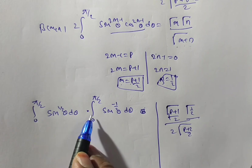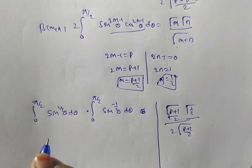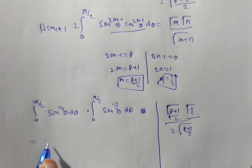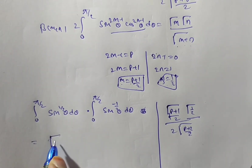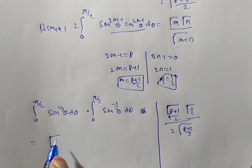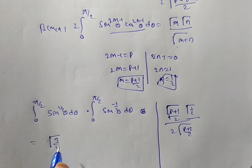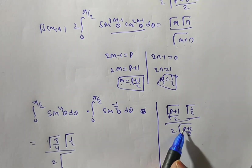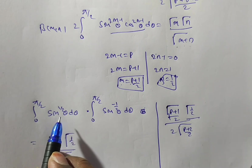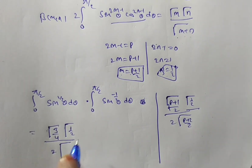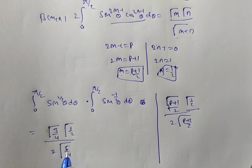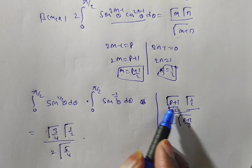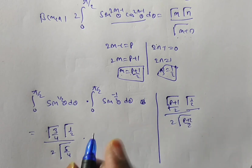For p = 1/2: numerator gives γ(3/4) · γ(1/2), denominator gives 2 · γ(5/4). For p = −1/2: numerator gives γ(1/4) · γ(1/2), denominator gives 2 · γ(3/4). Multiplying both results together: (1/2 + 1) = 3/4 and (−1/2 + 1) = 1/2, then 1/2 ÷ 2 = 1/4, giving γ(1/4) in the numerator.